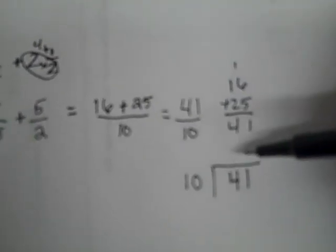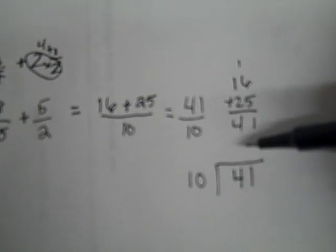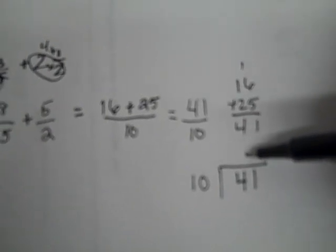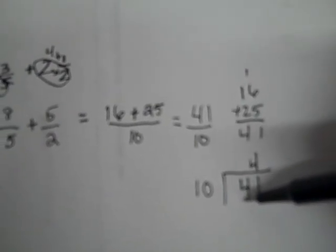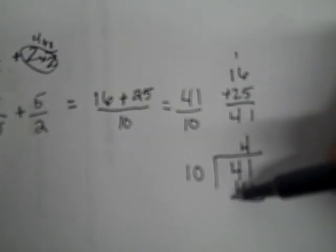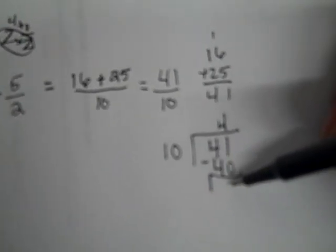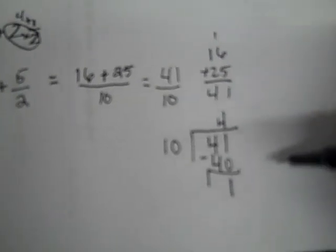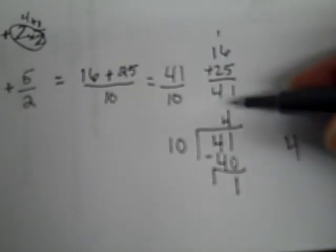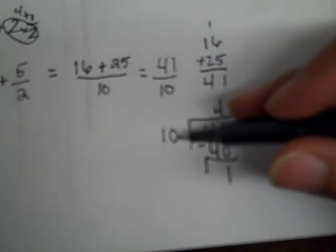4 is not greater than 10, but 41 is. And 10 can go into 41 4 times. 4 times 10 is 40. 41 subtract 40 is 1. Giving me an answer of 4 is my whole number on the top. My denominator is 10. That's the number that I was dividing by. And my numerator is 1. Leaving me with an answer of 4 and 1 tenth.